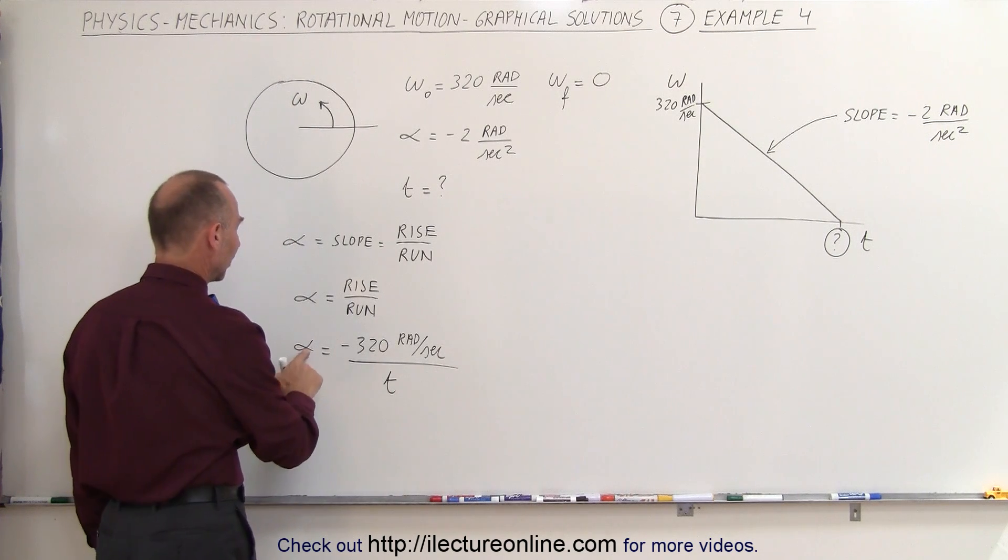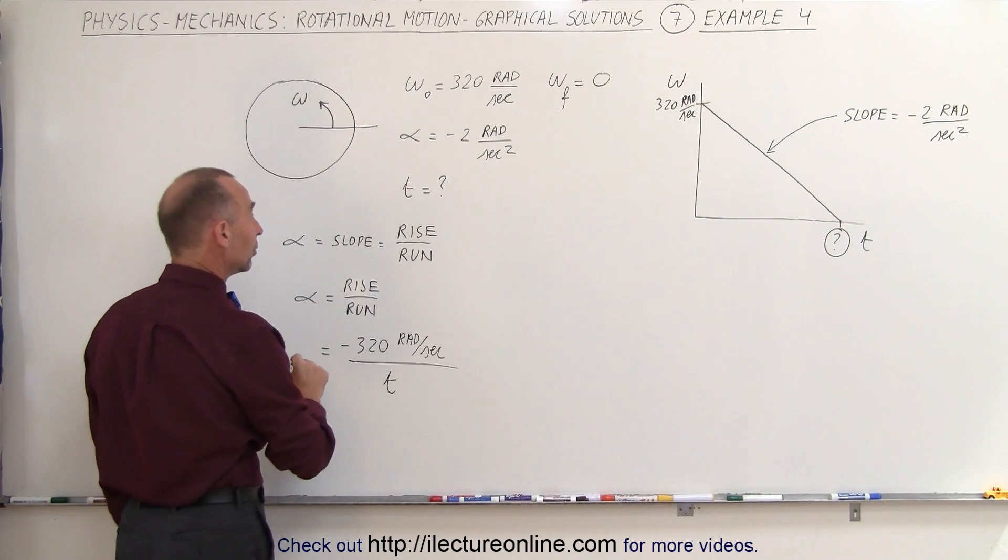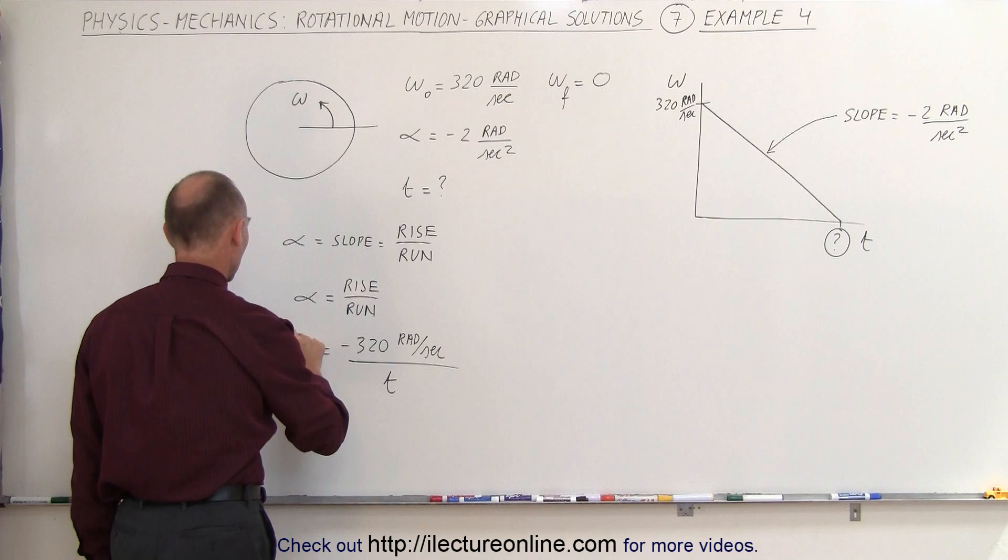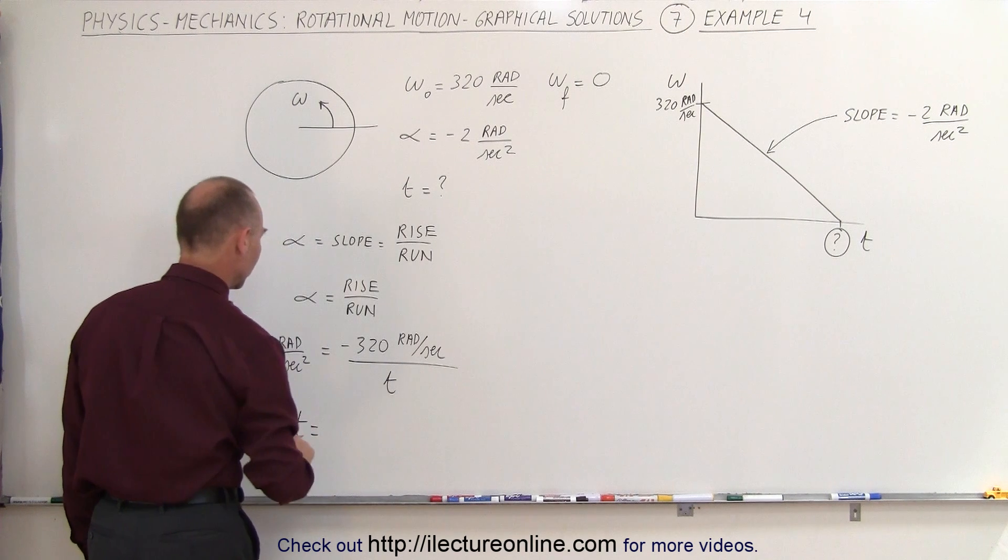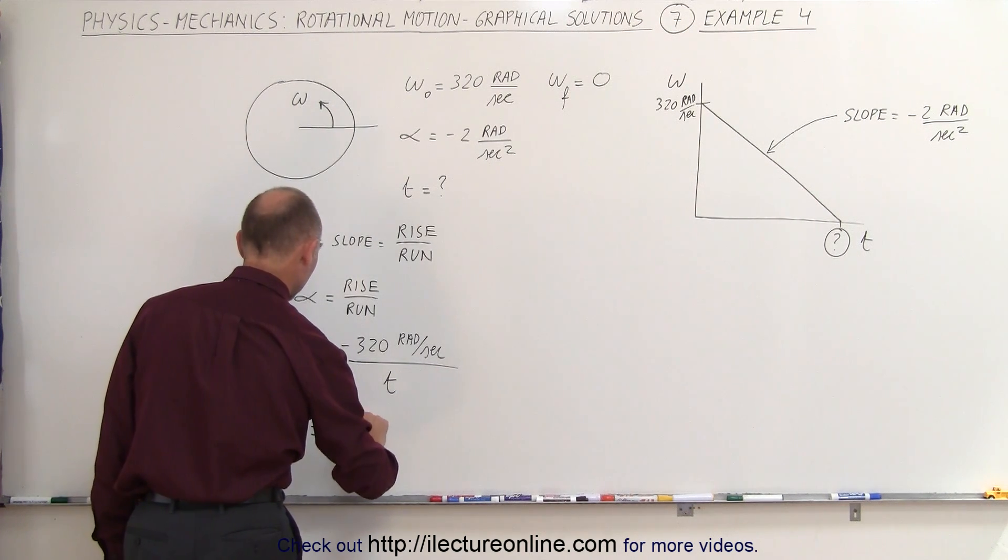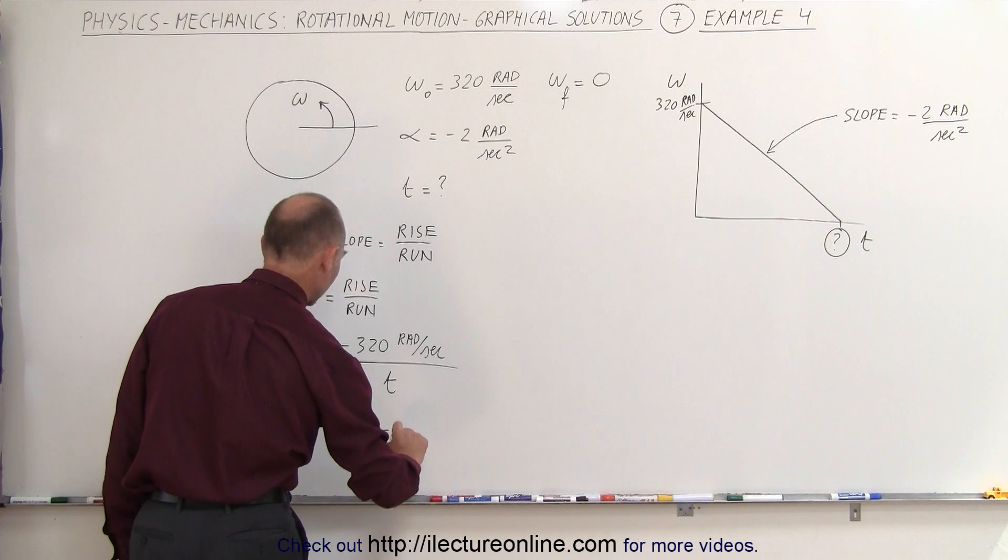And of course, instead of alpha, we can write what alpha is equal to, which is minus 2 radians per second squared, which means that t is simply equal to the ratio of minus 320 divided by minus 2, which is equal to 160, and the answer would be in seconds.